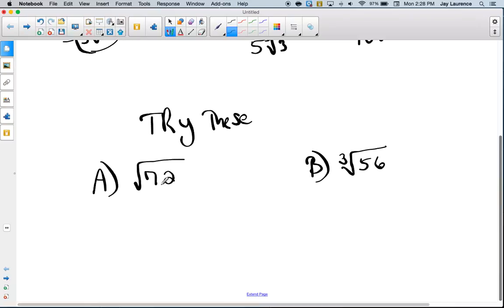All right. A is a square root, so I'm thinking 36. I'm thinking that rad 72 is the same as rad 36 times rad 2. Right? So that'll be 6 rad 2. And there you go.